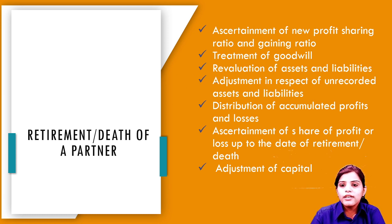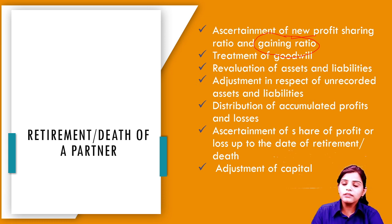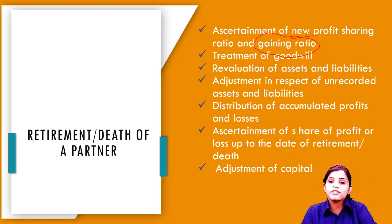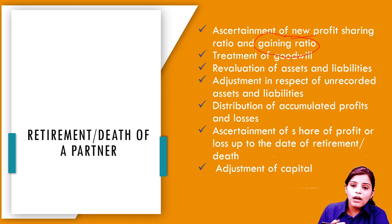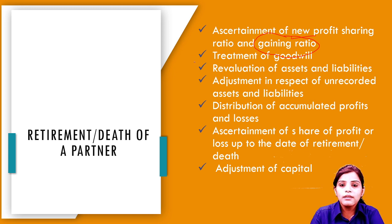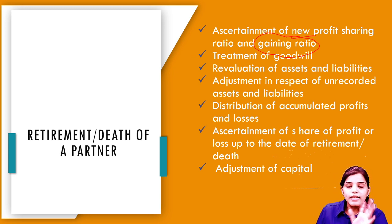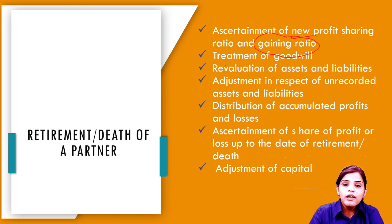Assessment of new profit sharing ratio — हमें partners के बीच नया profit sharing ratio calculate करना होगा, और एक और ratio — gaining ratio, लाभ-दायकता का अनुपात — calculate करना होगा। यानि नया लाभ-हानि अनुपात और दूसरा लाभ का अनुपात। एक हमने पढ़ा था त्याग का अनुपात जिसको sacrificing ratio कहते थे। यहाँ partner sacrifice नहीं कर रहे हैं — यहाँ partners को gain होता है, क्योंकि जब कोई एक partner business से चला जाता है तो remaining partners का profit बढ़ जाता है।